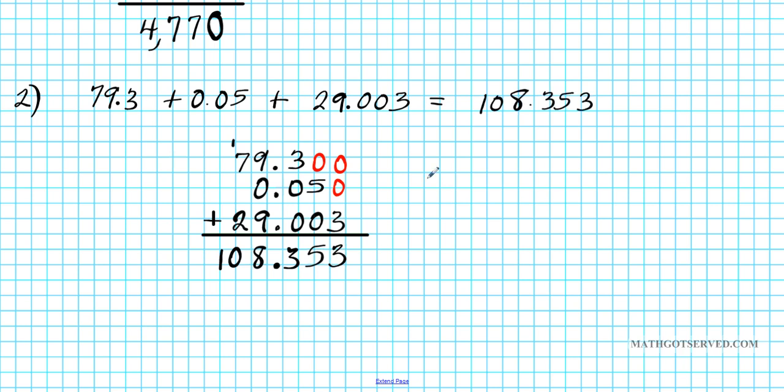So you see the benefit of lining everything up by place value columns and adding it in that fashion. It's nice, organized and it's very easy to get your answer correct when you orient it in that fashion. All right, let's take a look at number 3.